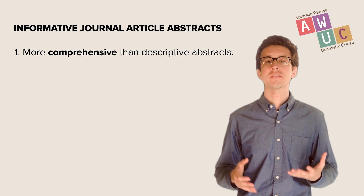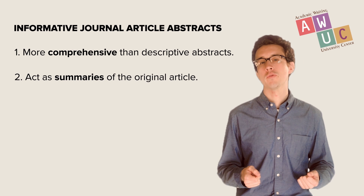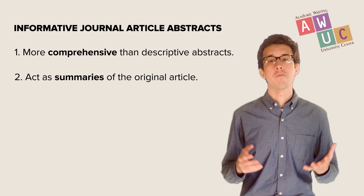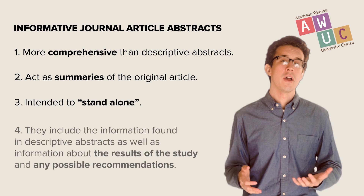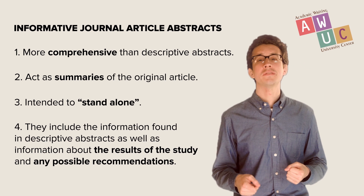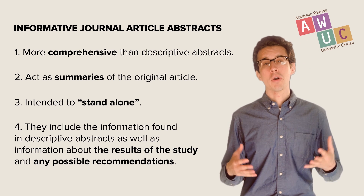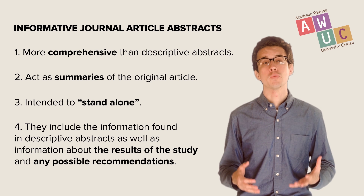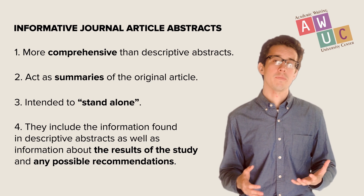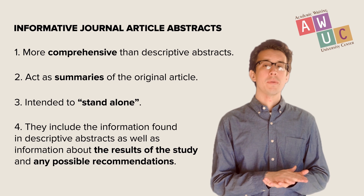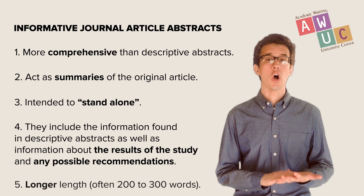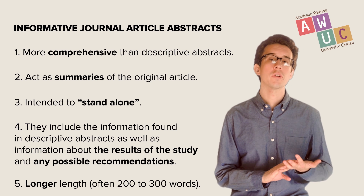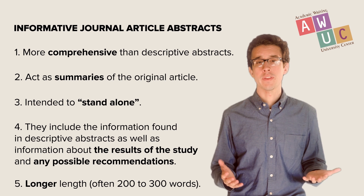Informative journal article abstracts are more comprehensive and more fully summarize the information found in the original work. Informative abstracts are expected to be stand-alone pieces of writing. They include the same information as descriptive abstracts, but also include information about the results and conclusions of a study, as well as any author recommendations. This means that informative abstracts are usually longer, often from 200 to 300 words, and sometimes even longer than that.